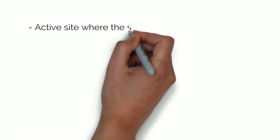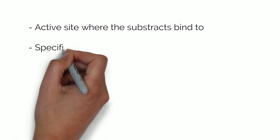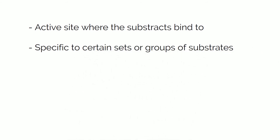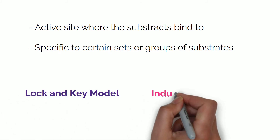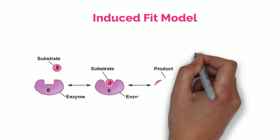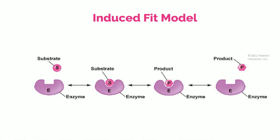Enzymes have an active site — this is where the substrates bind to. These active sites are specific, meaning each enzyme binds to a specific set of substrates or a group of similar substrates. Enzymes bind with their substrates through two different mechanisms: the lock-and-key model and the induced fit model. In the induced fit mechanism, the binding site of the enzyme only approximately fits the substrate. When they start to bind, the active site changes its shape to adjust to the substrate, turning it into a product.